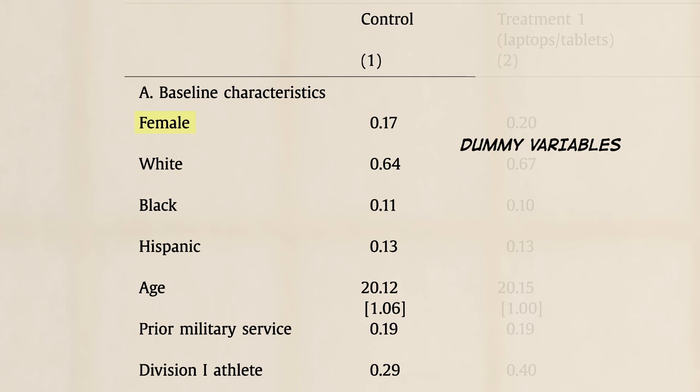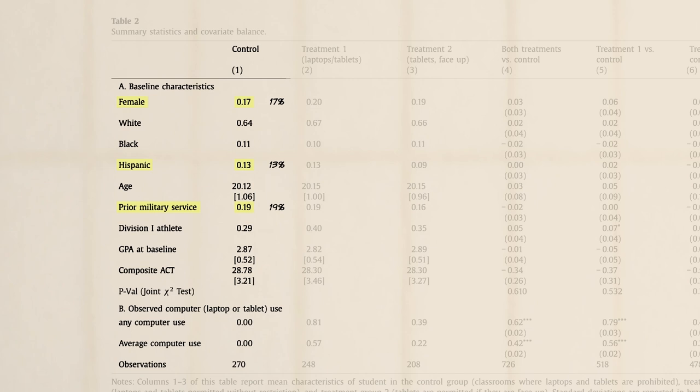For example, student gender is captured by a dummy variable that equals 1 for women and 0 for men. The mean of this variable is the proportion female. We also see that the control group is 13% Hispanic and 19% had prior military service.